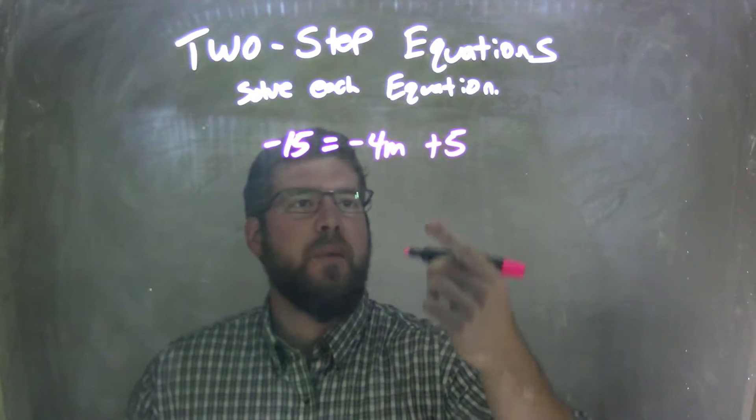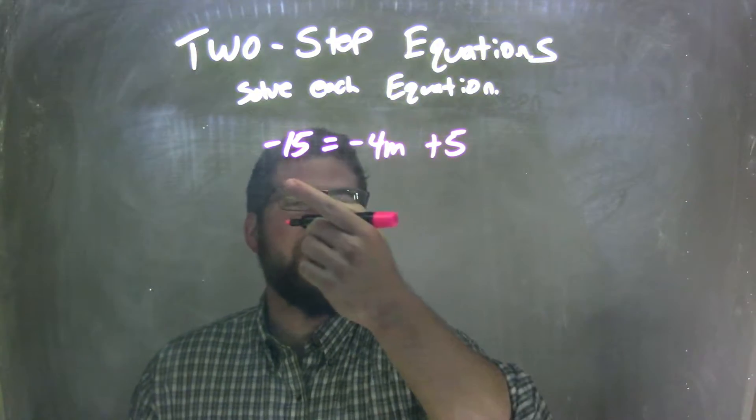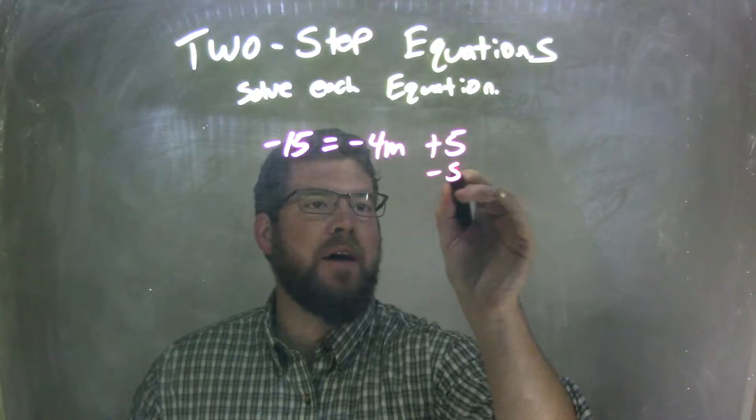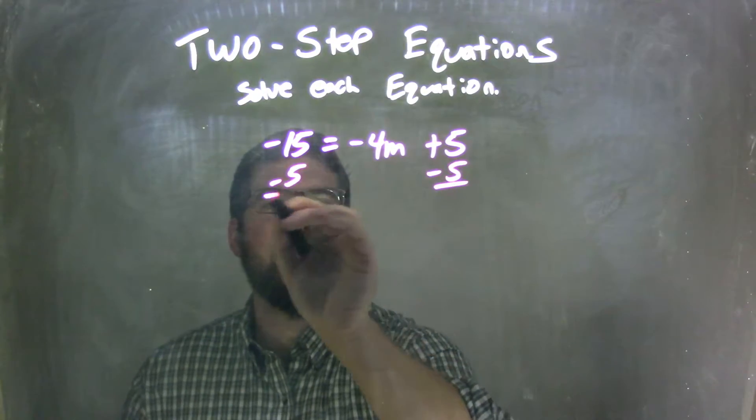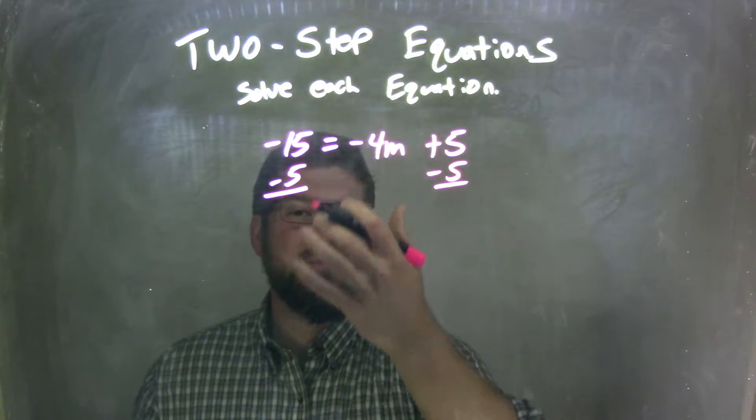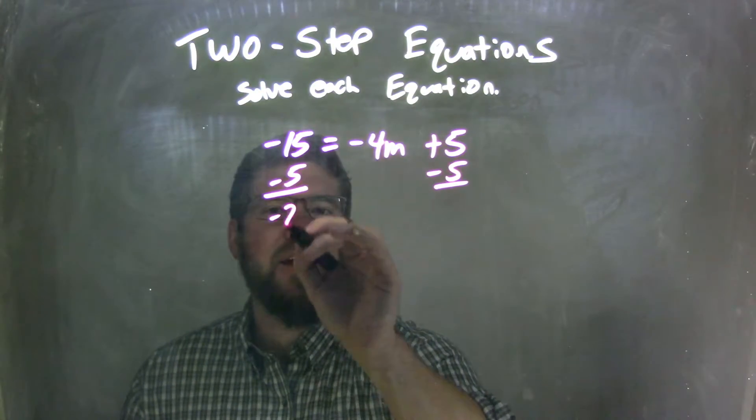Well, my first step would be to get this 5 over to the left. I see there's adding a 5, so opposite of that is subtracting a 5. So I'm going to subtract 5 from both sides. I have negative 15 minus 5, that makes it more negative, that actually becomes negative 20.